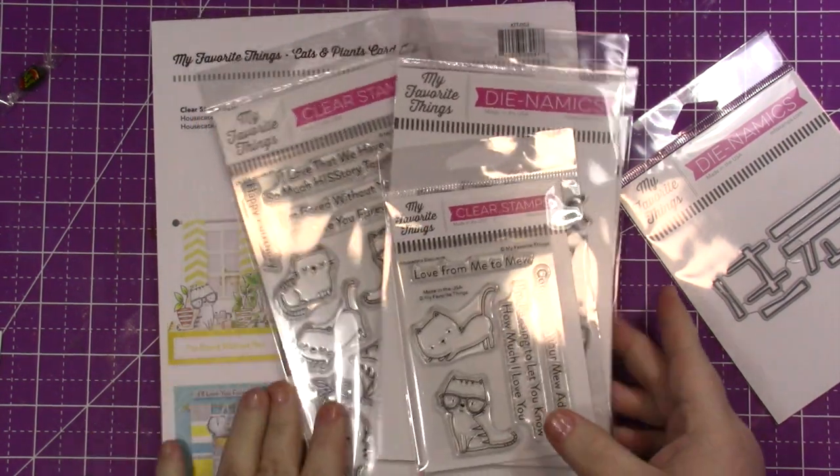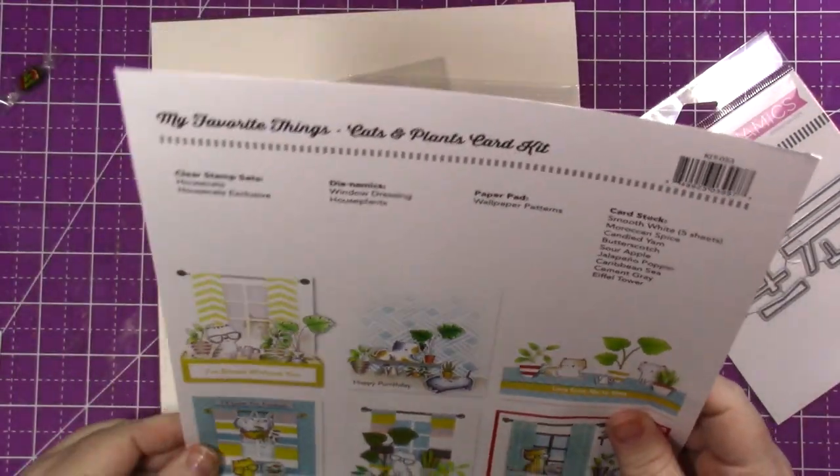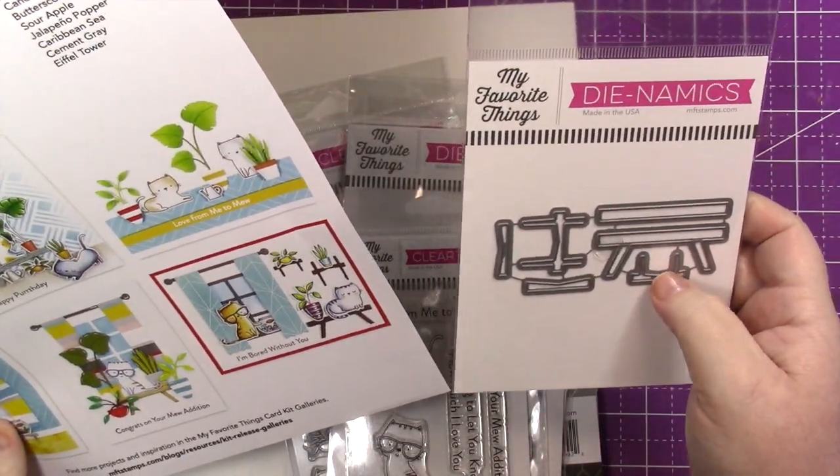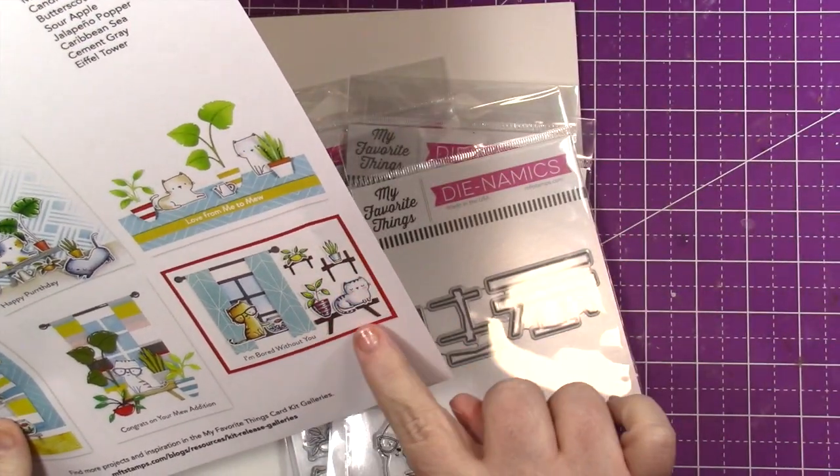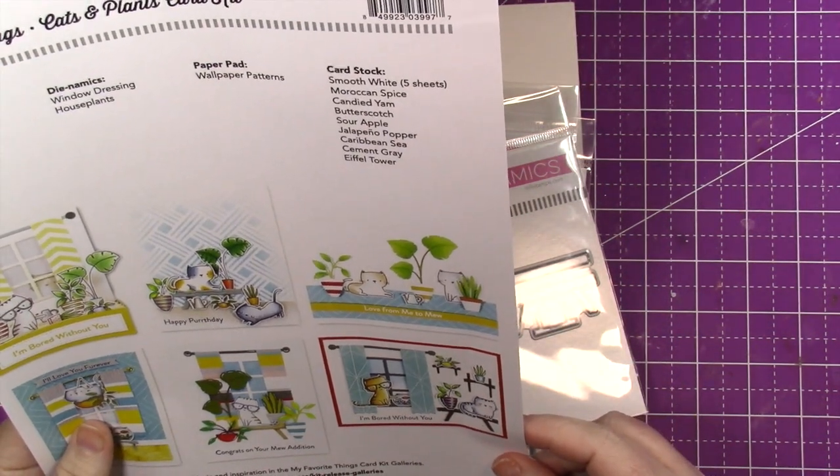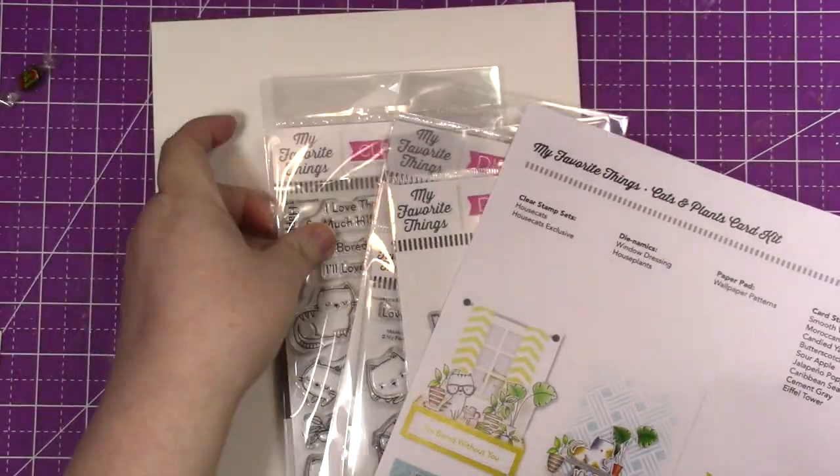Okay, so this is the Cats and Plants card kit. And you know why I got it, because cats. But I'm pretty sure these are so much fun. I'm so excited. It comes with the House Cats stamp, which is this one. You can purchase this stuff separately except for the one I'm about to show you.